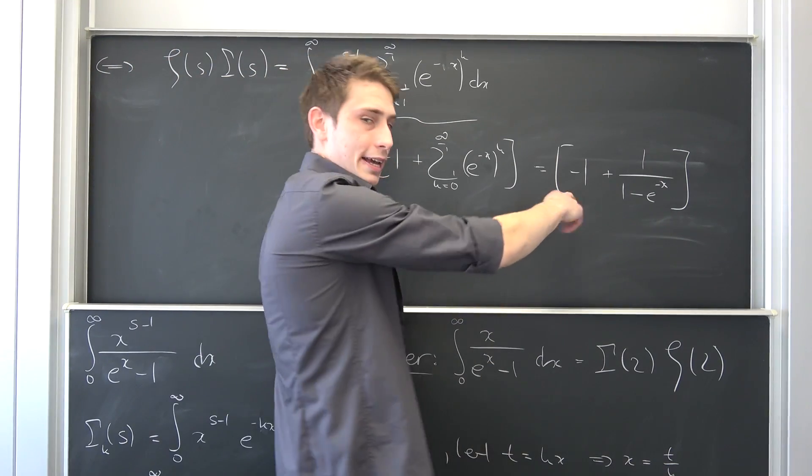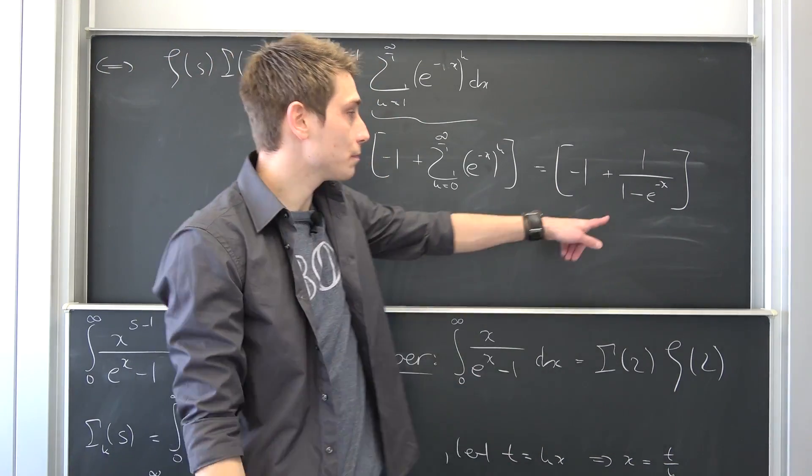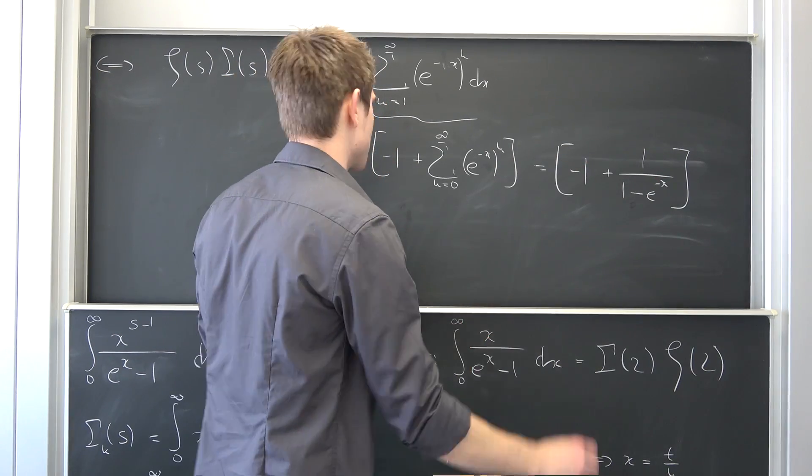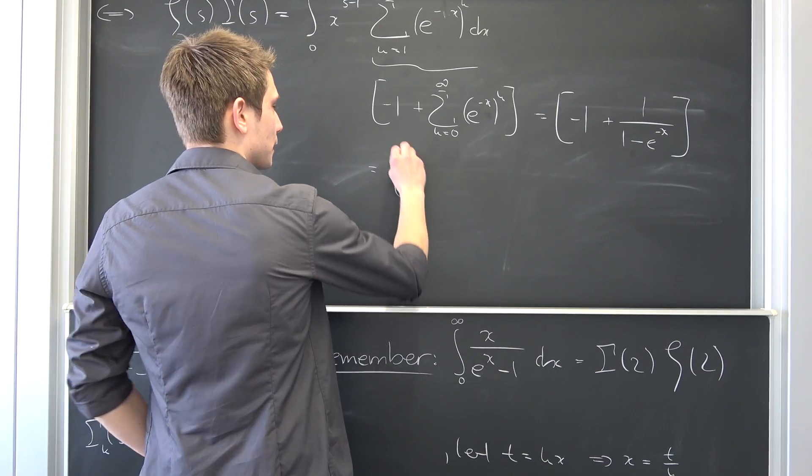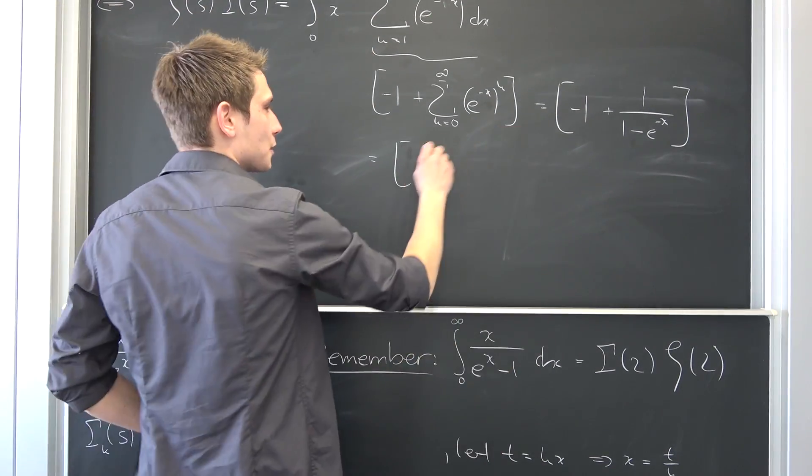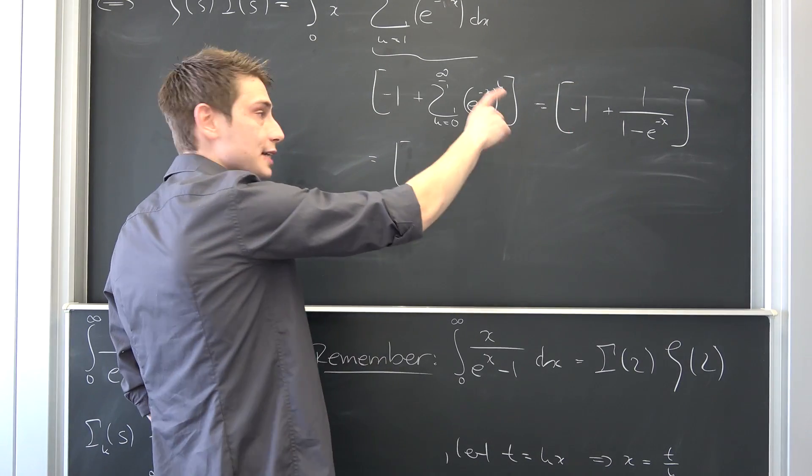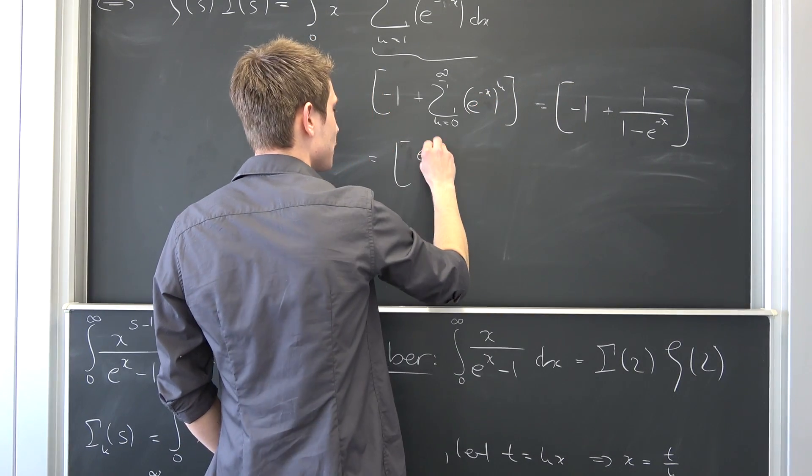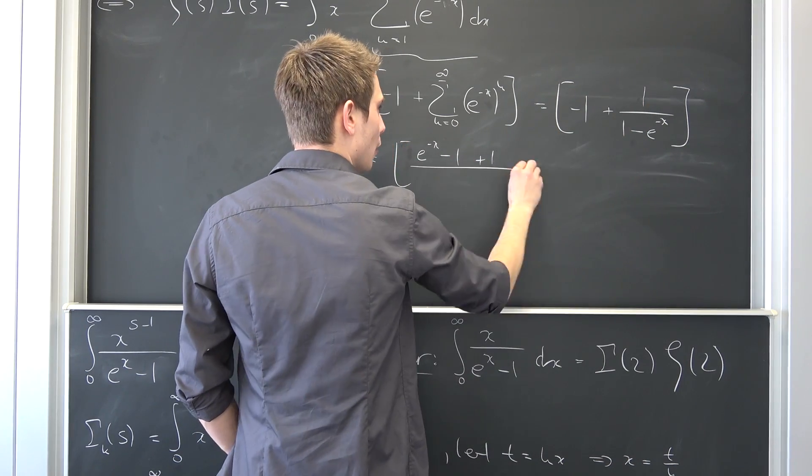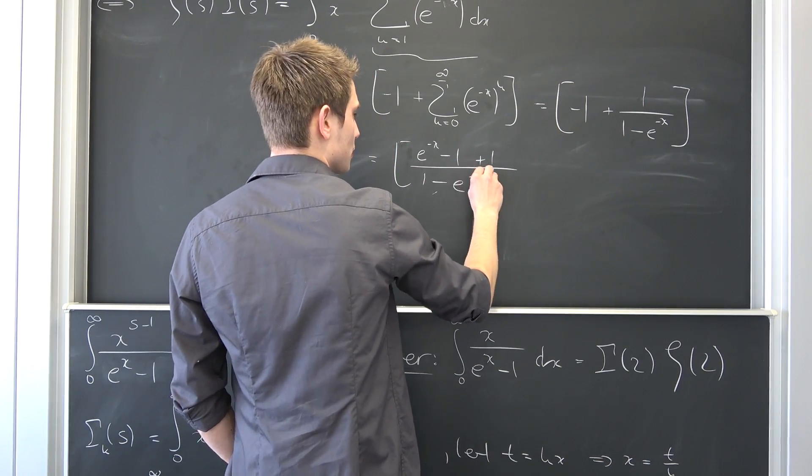We can advance this negative 1 a bit, this fraction, by 1 minus e to the negative x over 1 minus e to the negative x. We are going to get, we are still just dealing with this infinite series right here. So this is going to turn the signs around. So e to the negative x minus 1, then adding this 1 to it over 1 minus e to the negative x.